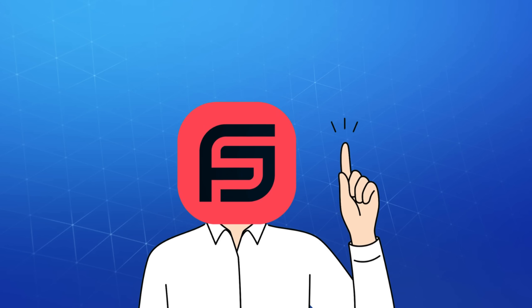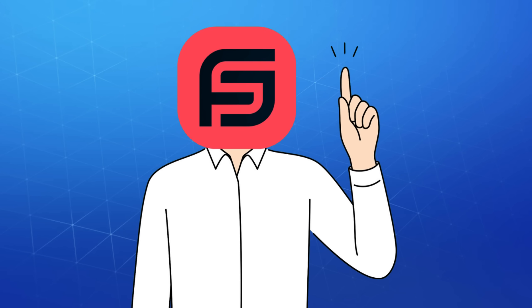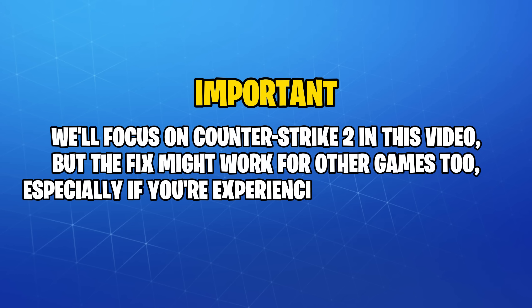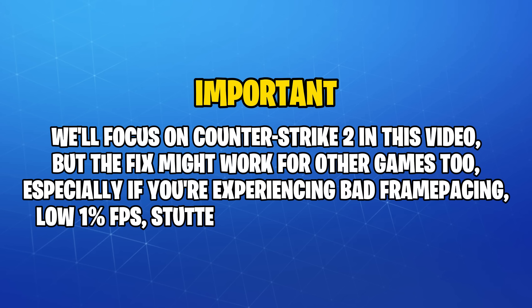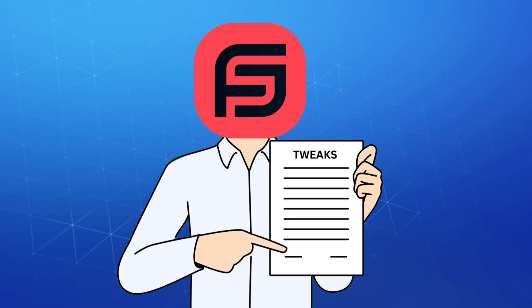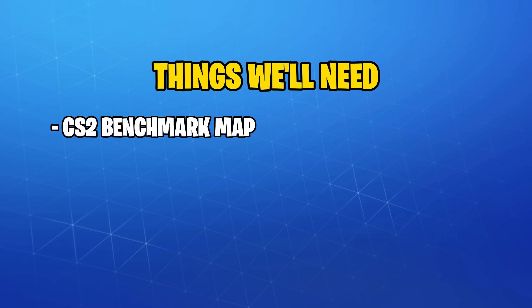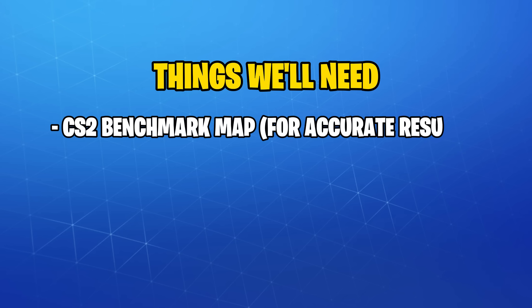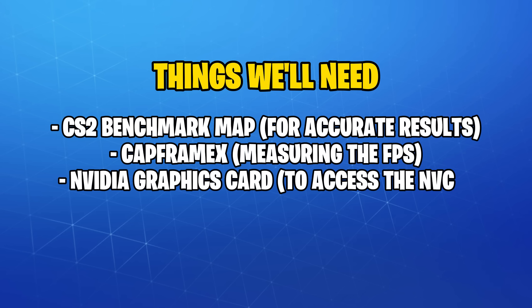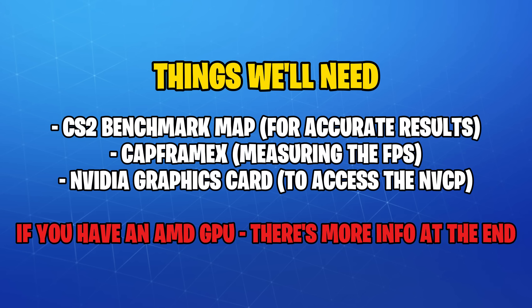Now let's get back to it. First thing I want to mention is that we'll be testing this in CS2, but it might help if you're experiencing bad frame times and 1% lows in other games too. There are three things we'll need before we start: the CS2 benchmark map, then CapFrameX, which we'll use to measure metrics like FPS and frame times, and finally an NVIDIA graphics card so we can access the control panel settings.